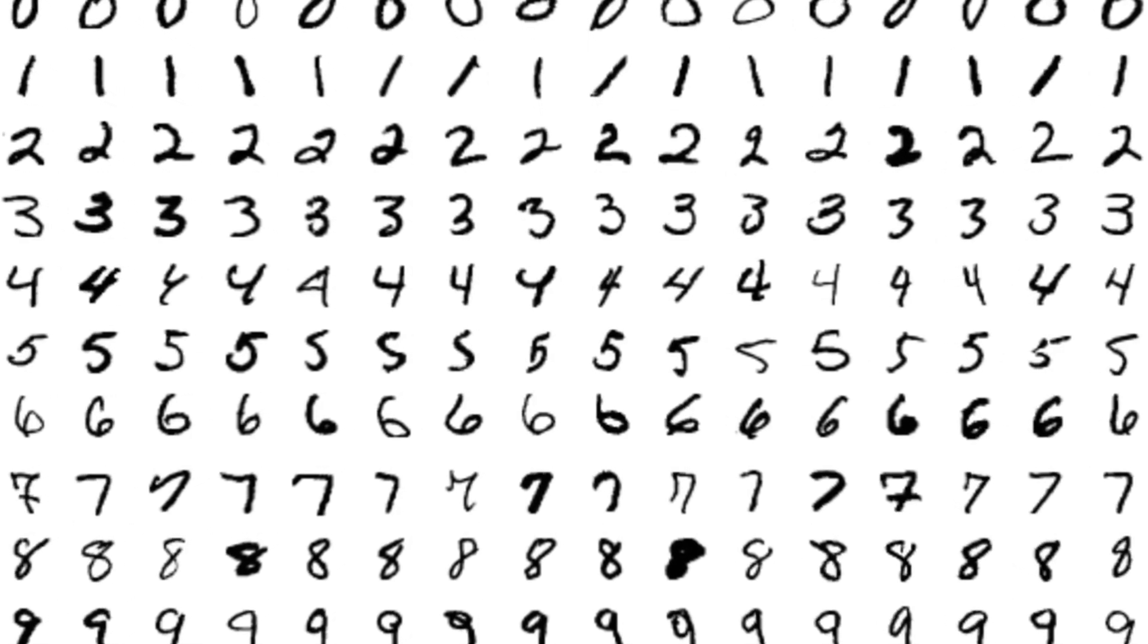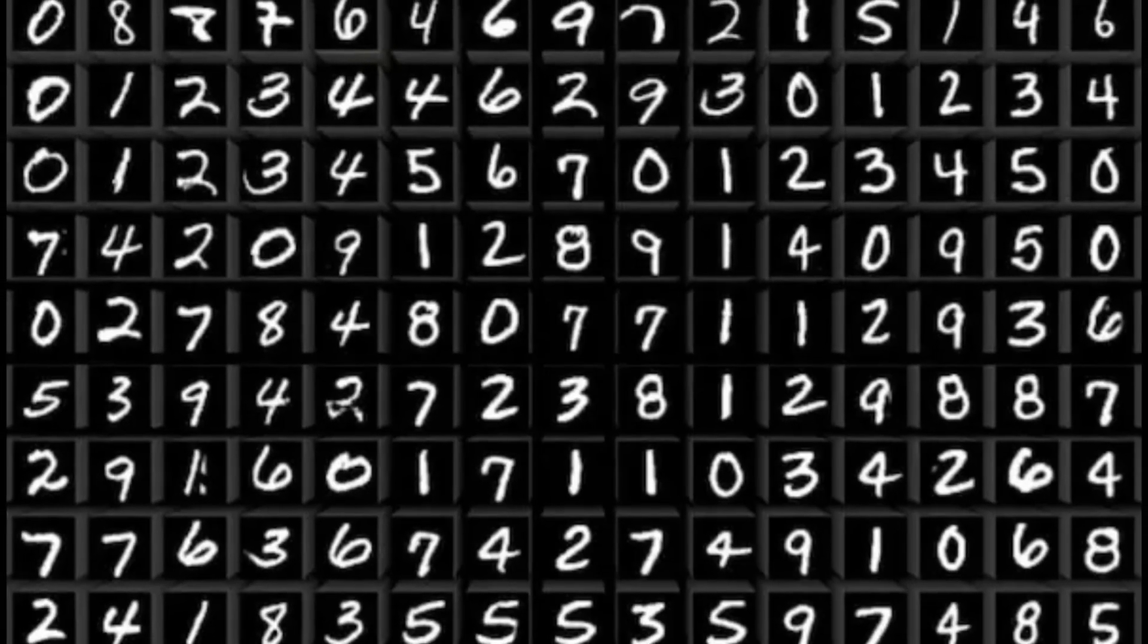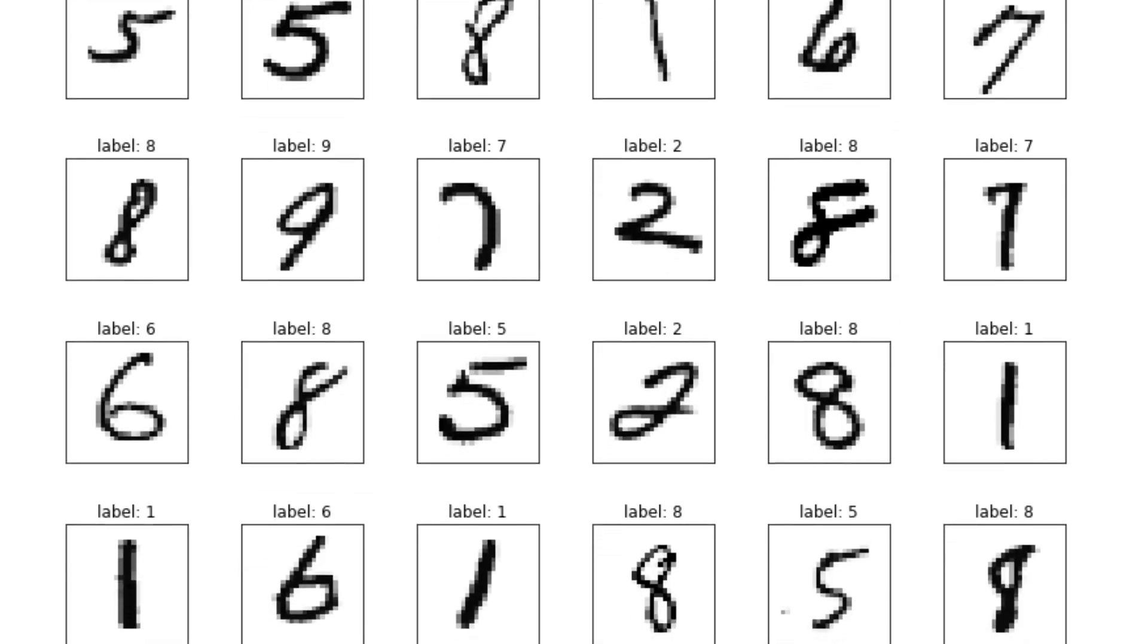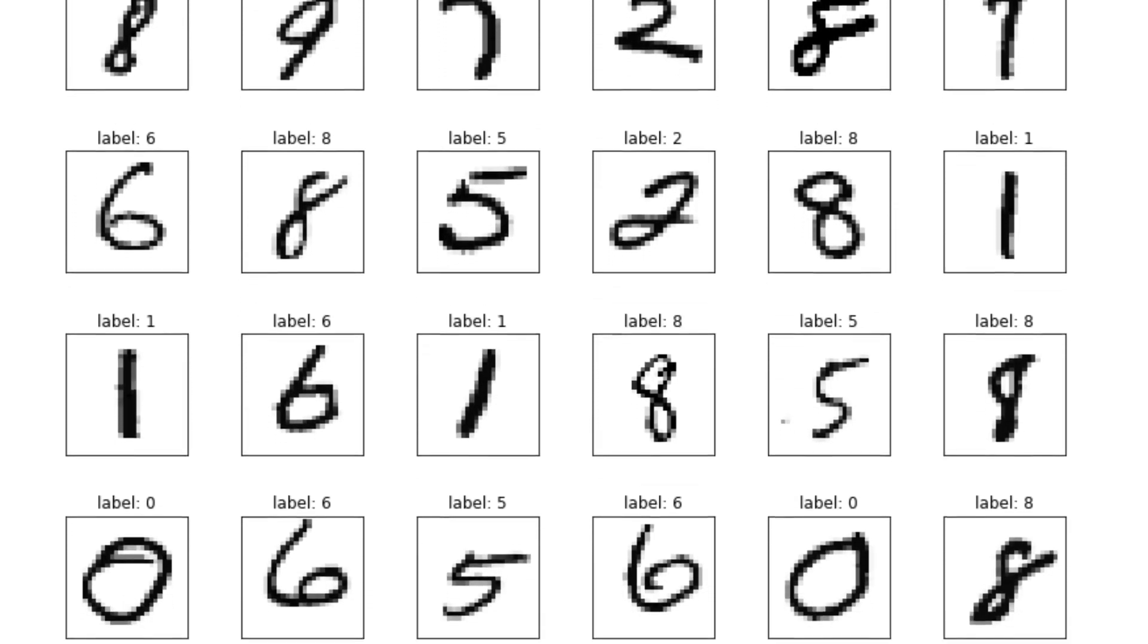In fact, a dataset of 70,000 handwritten digits was published by the US National Institute of Standards and Technology in 1994, and has been used for 30 years by computer scientists to test and train new machine learning techniques.